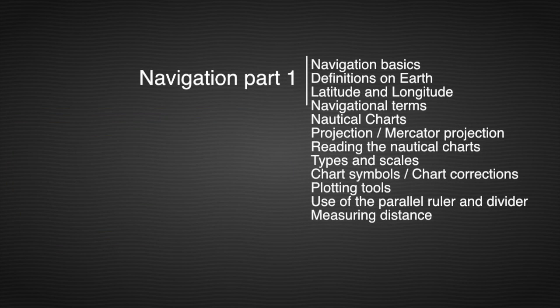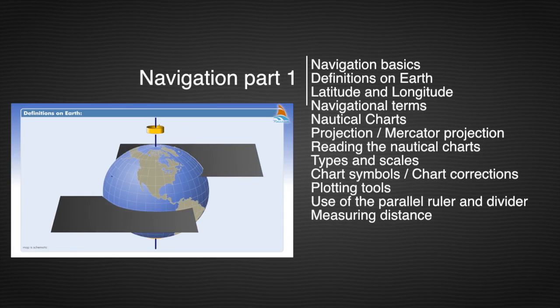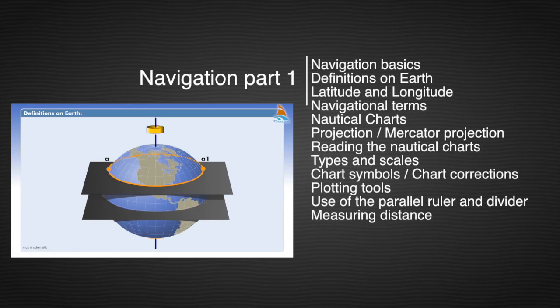Navigation part 1. The circumference of the small circle AA1 with a plane parallel to the equator is called the parallel of latitude.